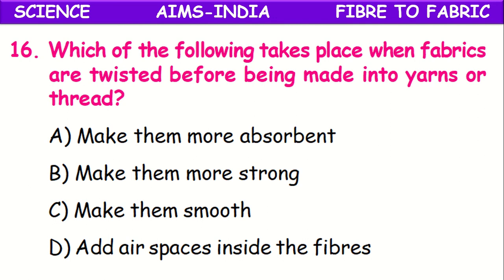Which of the following takes place when fibers are twisted before being made into yarns or thread? The options are: make them more absorbent, make them more strong, make them smooth, or add air spaces. Twisting makes the fiber more strong.